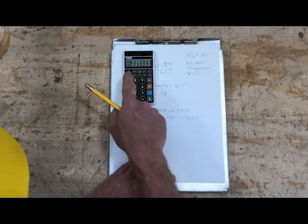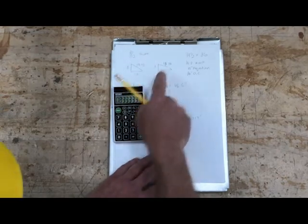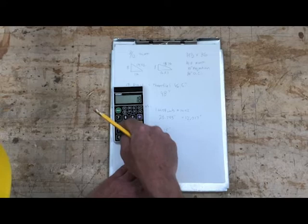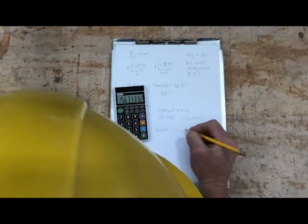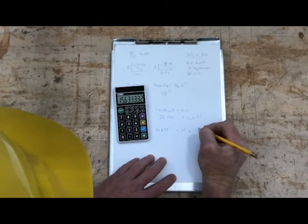So I still have that same 0.8333 units like I did here for my commons. And I just have to multiply that by my unit line length of a hip or valley. And I get 15.633 inches.